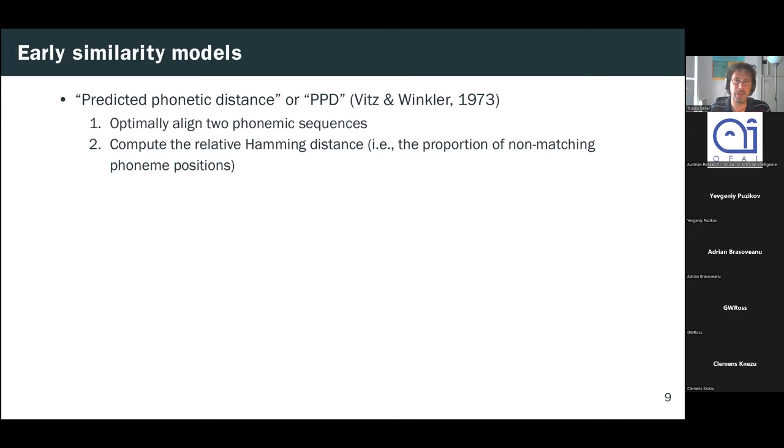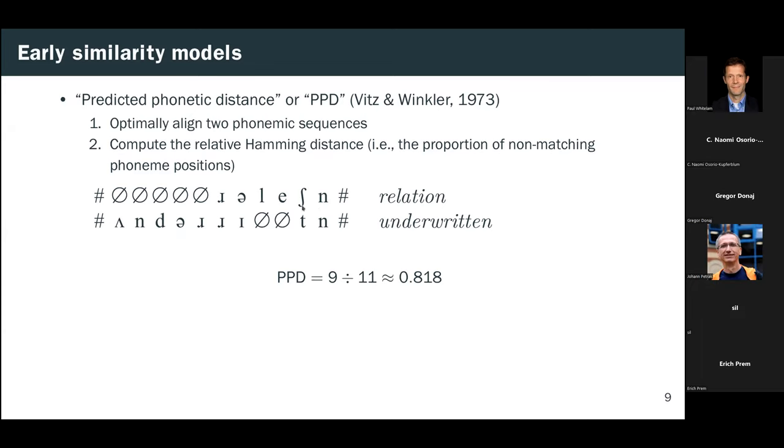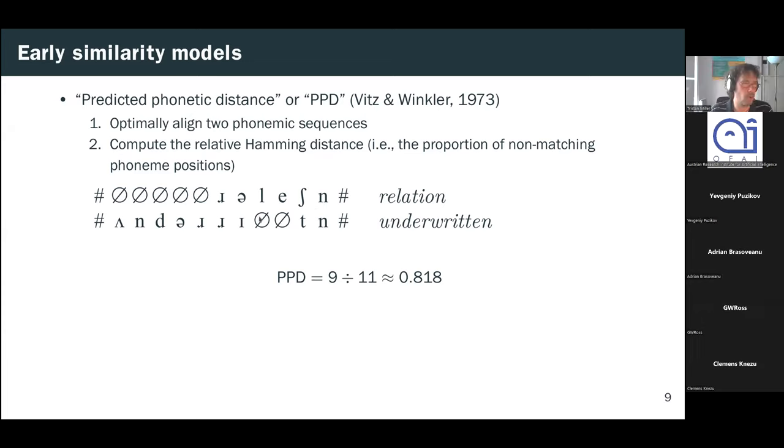Now, one of the earliest and most influential studies on the sound similarity of words in general, is that of Vincent Winkley. And they start by producing an optimal alignment of phonemes between the two words, such that each phoneme is paired with either a single phoneme in the corresponding word or else with a null segment. They then compute the proportion of non-matching phoneme positions. And they call this the predicted phonetic distance, or PPD. So, for example, if we want to compute the distance between the word relation and the word underwritten, what we would do is we would write out the phoneme transcriptions, as we've shown here, using the international phonetic alphabet. And we would align them again, and we would align them on a grid here, and then we would observe that if we just count these, that nine of these 11 positions don't match. And so our PPD would be 9 divided by 11 is approximately 0.8.